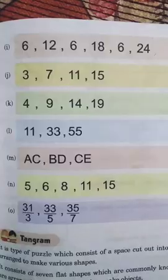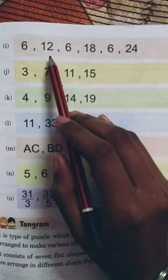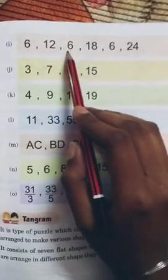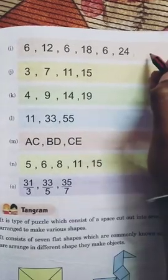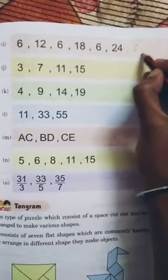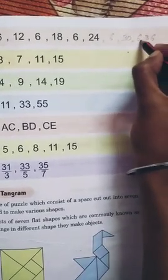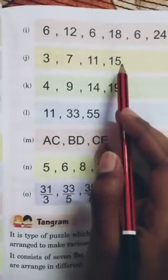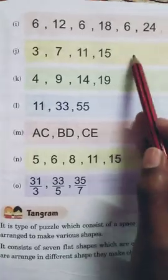Now see the I. 6, 12, 6, 18, 6, 24. Here is the table of 6. Like here 6, 1, just 6. 6, 2, 0, 12, then 6, 3, 0, 18, 6, 30, 6, 36. Next 3, 7, 11, 15. Here is the gap of 4. So children, you can write by own.